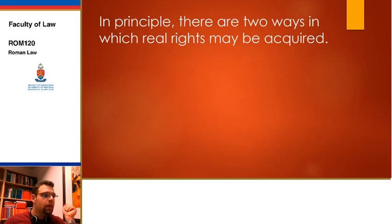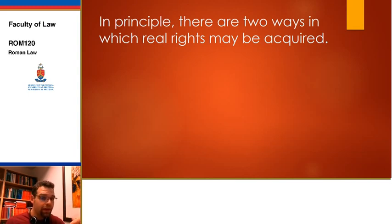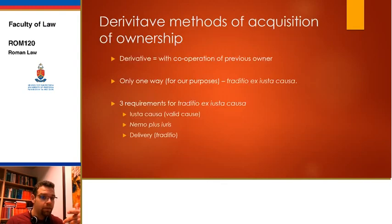We need to start off by talking about the acquisition of real rights. How are real rights actually acquired? How do they come into being? In principle, there are two ways in which this may occur. First of all, we can talk about derivative methods of acquisition of ownership.